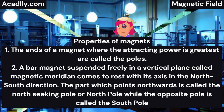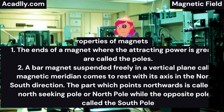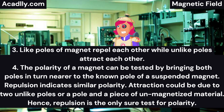Properties of magnets. 1. The ends of a magnet where the attracting power is greatest are called the poles. 2. A bar magnet suspended freely in a vertical plane called the magnetic meridian comes to rest with its axis in the north-south direction. The part which points northwards is called the north-seeking pole or north pole, while the opposite pole is called the south pole. 3. Like poles of a magnet repel each other, while unlike poles attract each other.